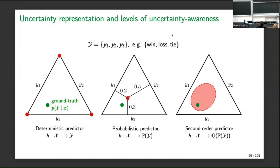We can represent the probabilities as points in this barycentric coordinate system — a projection of the two-simplex you have already seen. Every point corresponds to a probability distribution over one of the three classes. Our assumption is that there is a ground truth conditional probability of the outcomes given x — we take a frequentist position here, a common assumption in machine learning. The green point is the ground truth and the red one is the predicted probability; we will never exactly hit the ground truth.